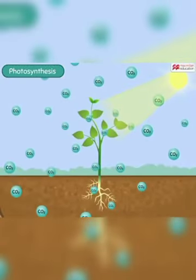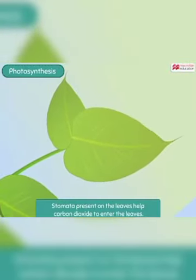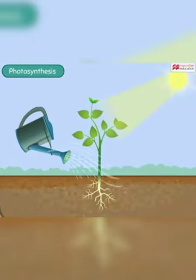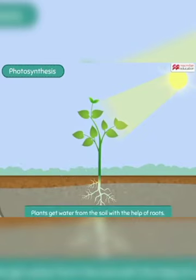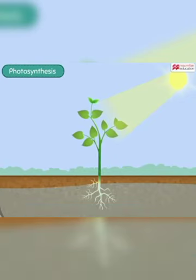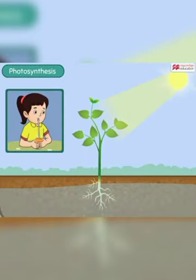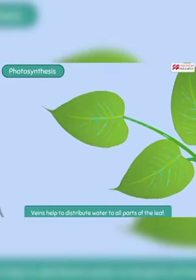Plants obtain carbon dioxide gas from the air. Tiny holes called stomata, present on the leaves, help this carbon dioxide to enter the leaves. The next important thing needed by the plant is water. Plants get water from the soil with the help of roots, just like the straw that you use to drink juice. The roots and stems of a plant have narrow tubes that help carry water from the roots all the way up to the leaves. The veins in the leaves help to distribute this water to all the parts of the leaf.